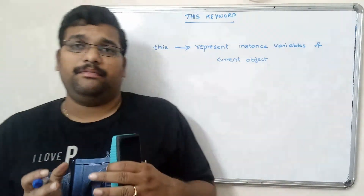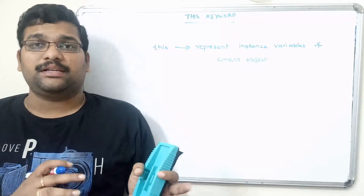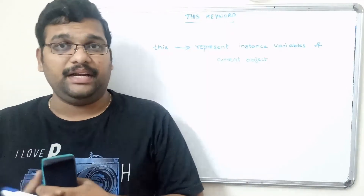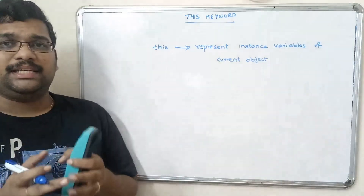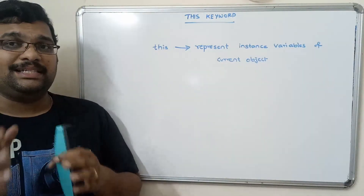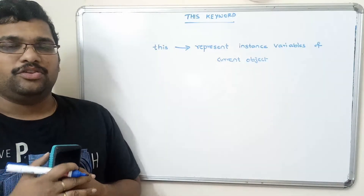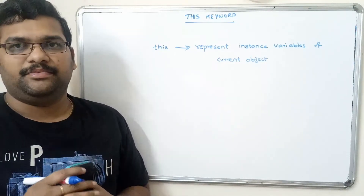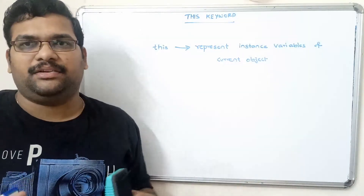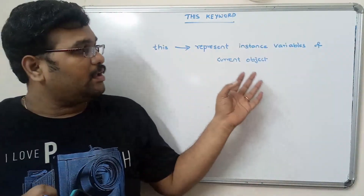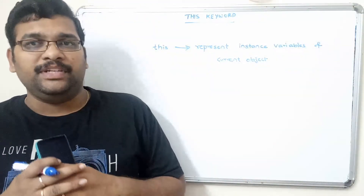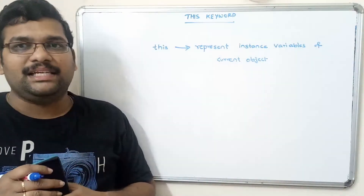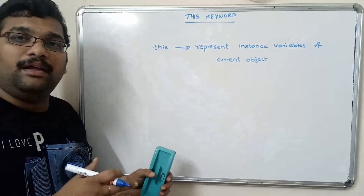Every class will have variables and methods. Variables are of three types: local, instance, and static, as we have seen in previous sessions. Instance variables are declared inside the class but outside the method. To access these instance variables, that can only be done through the object, using the 'this' keyword.